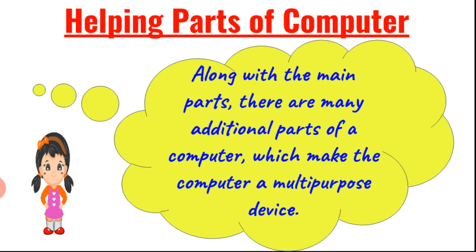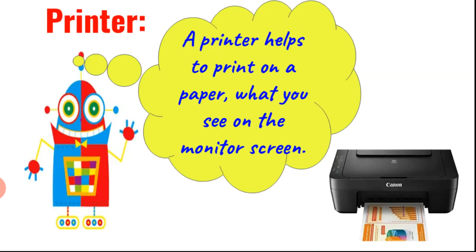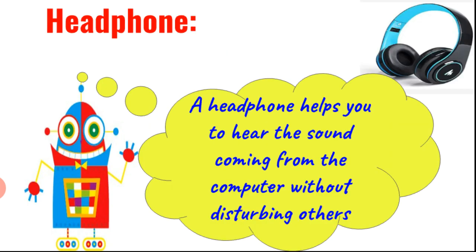Along with the main parts, there are many additional parts of a computer which make it a multipurpose device. A printer helps to print on paper what you see on a monitor screen — it can print text, pictures, and photographs. The printed paper is called a printout. A headphone helps you to hear sound coming from the computer without disturbing others.